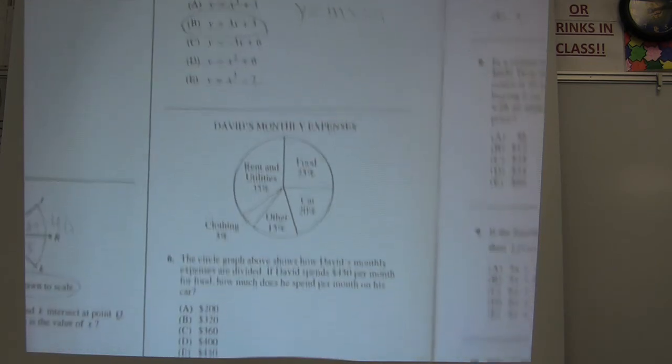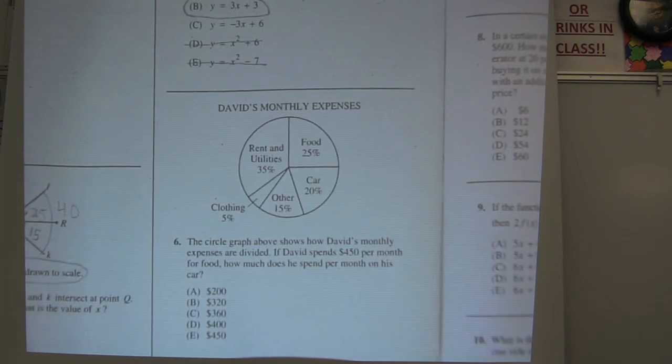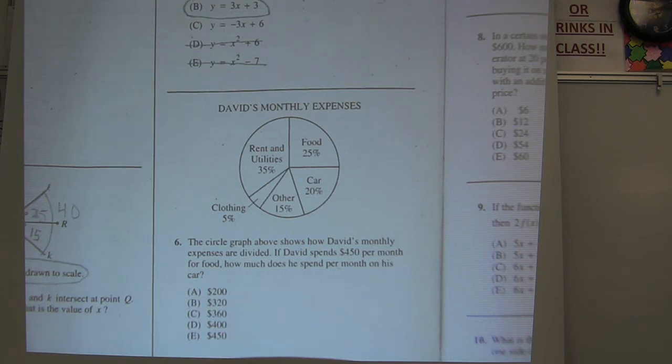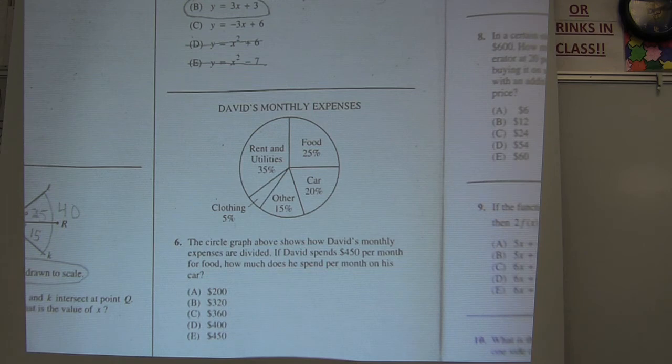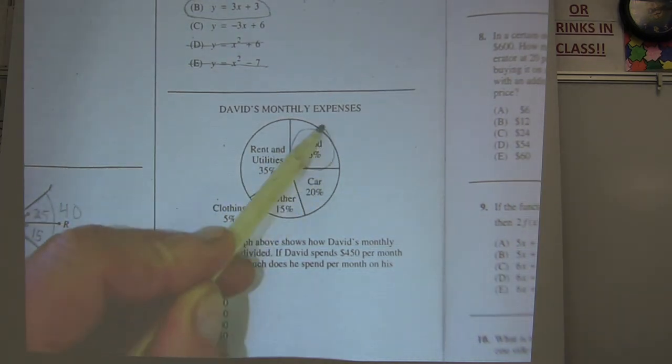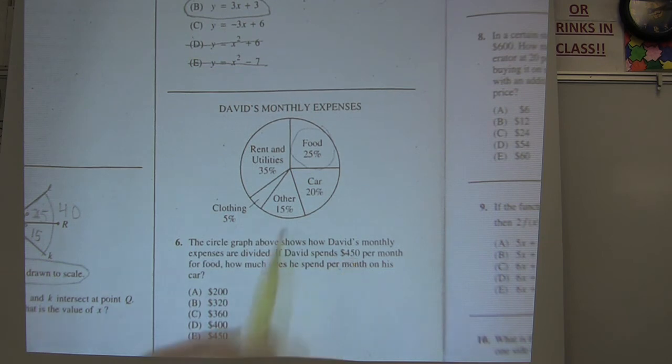Okay, this next one, another chart. These charts scare students a lot, and I can understand why, especially when you get into the word problems and charts also. Let's go through this one. The circle graph above shows how David's monthly expenses are divided. If David spends $450 per month for food, how much does he spend per month on his car? Okay, let's go up to the chart. It says food right here. This 25% represents how much he's spending right here. So that 25% means he's spending $450.